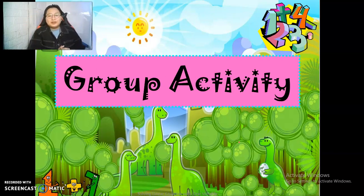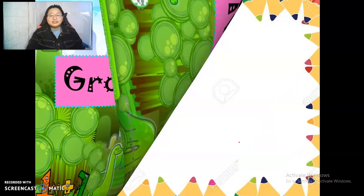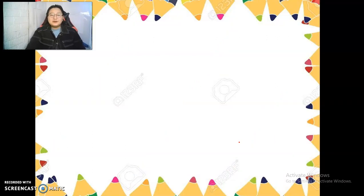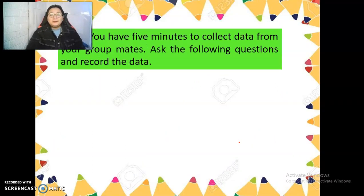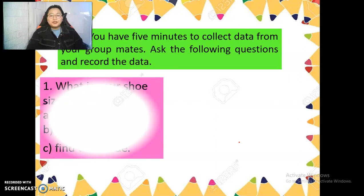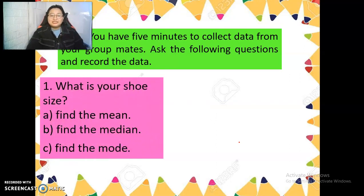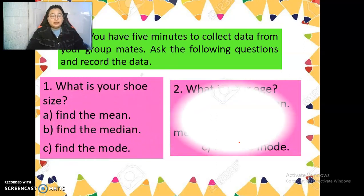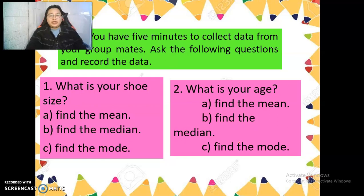I think you are all ready for our group activity. Group yourselves into nine members. And then answer these following questions. You have five minutes to collect the data from your group mates. Ask the following questions and record the data. First, what is your shoe size? Find the mean, median, and the mode. And the second one is what is your age? Find the mean, median, and the mode too. You've got five minutes.